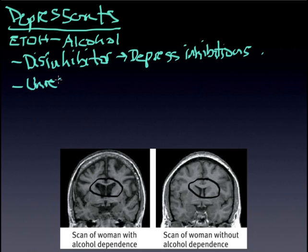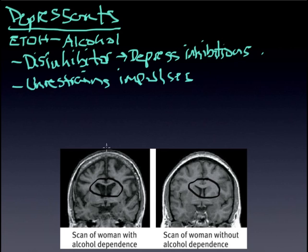The interesting thing about it is that it kind of unmasks or unrestrains things that you feel when you're not intoxicated — impulses, essentially. When you're not intoxicated, you feel the impulses but you restrain them, and alcohol simply takes the locks off, so to speak. So we have slowed neural processing and reaction time decrease, meaning it takes longer and longer to respond.